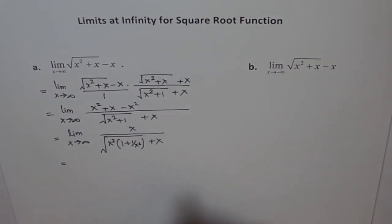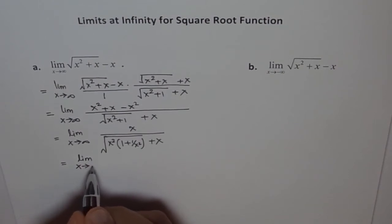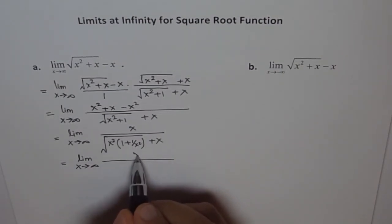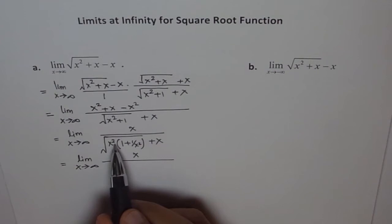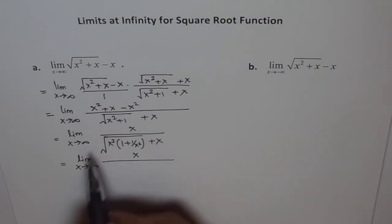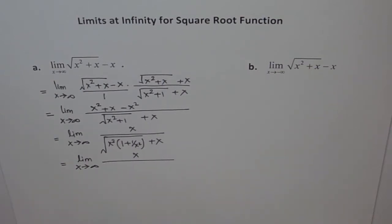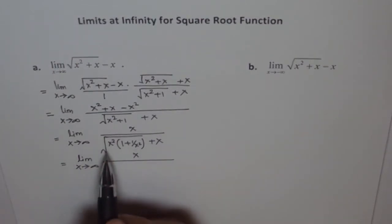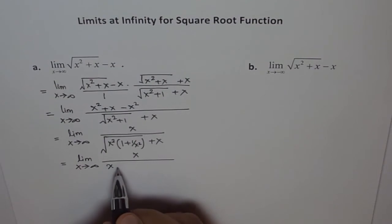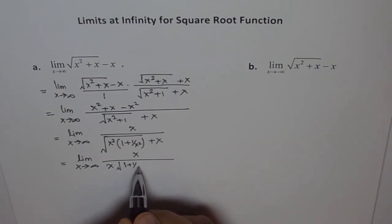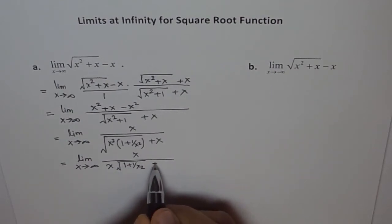I want to remind you to look into my video on square root of x squared. Square root of x² is absolute value of x — it is not just x, it's |x|. That is the most important thing here. In this case, because we are approaching positive infinity, the absolute value of x will be positive itself — that's how |x| is defined. Therefore we get x outside the square root, and within the square root we have 1 plus 1/x², plus x.